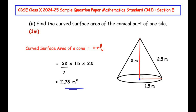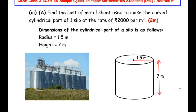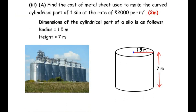Now let us move on to the third sub-question: find the cost of metal sheet used to make the curved cylindrical part of one silo at the rate of ₹2000 per meter square. The dimensions of the cylindrical part are: radius is 1.5 meters and height is 7 meters. We are focusing on the cylindrical part and must find the cost of metal sheet for its entire curved surface area, given that 1 m² costs ₹2000.